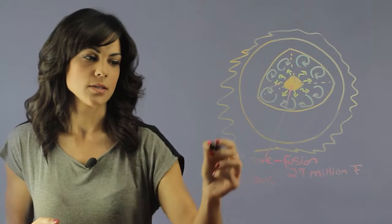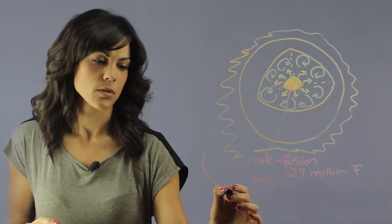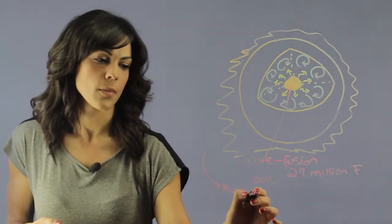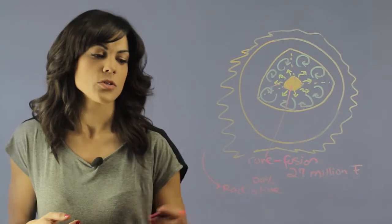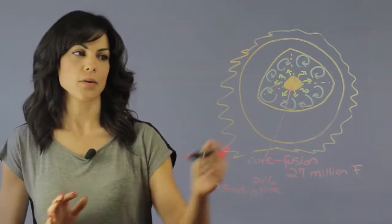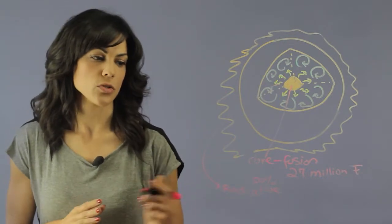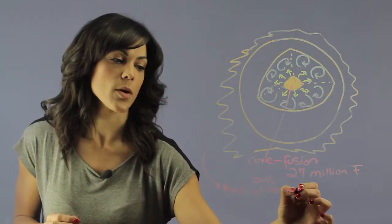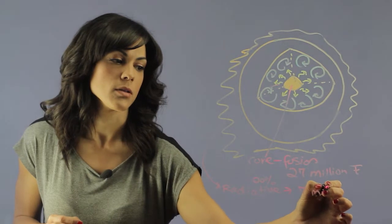The first zone is the radiation zone. It uses radiative transfer so the energy just radiates out, and this is the radiation zone, and the temperature actually drops to about 7 million degrees Fahrenheit.